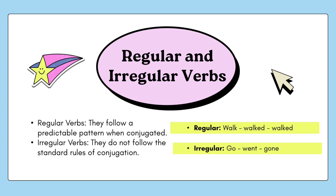Regular and irregular verbs. Regular verbs form their past and past participle by adding the suffix '-ed'. For example: walk, walked, walked. Irregular verbs do not follow this pattern. For example: go, went, gone — we don't add '-ed'. Another example: write, wrote, written — again, no '-ed' suffix is added.